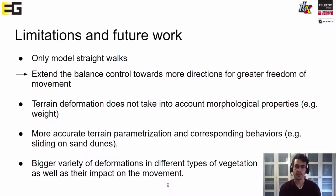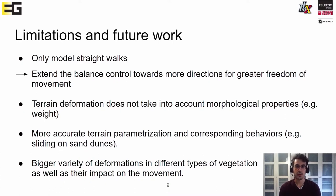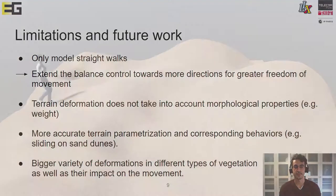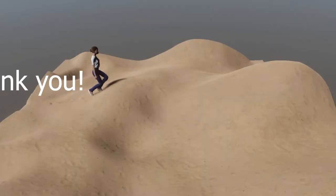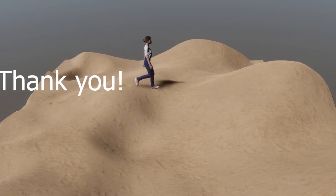For the terrain deformation, we are aiming to improve the system by including modifications based on the morphology of the character, such as its weight or contact area between the foot and the ground, and a more extensive parametrization of terrain properties. In the case of vegetation, we are working on a wider variety of plastic and elastic deformations as well as impacts on the character's movement. Additionally, new control layers for other body parts, like the arms, could improve local and global adaptations. Thank you very much for your attention, and if you have any questions, please don't hesitate to ask us.